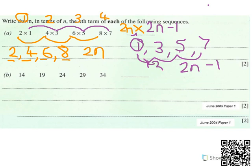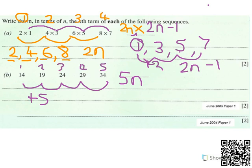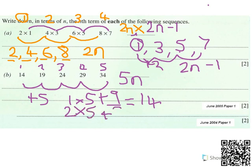The second part B is like questions from the last video. This one changes by going up in fives, so it's add five. If it's add five, that means we must be doing five times n. One times five is five, and that doesn't get me anywhere near fourteen. We're going to have to add nine. Does that work for two? Two times five plus nine — two times five is ten, plus nine is nineteen. So my rule is five n plus nine.